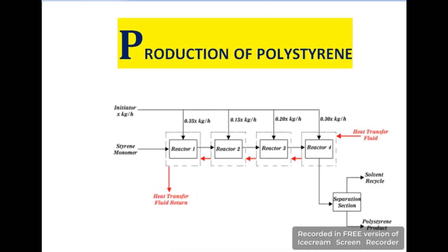Here you can see the production process flow sheet of polystyrene. Four reactors are provided in which the reaction takes place at different conditions. After the reaction we get a mixture, and after separation of that mixture we get polystyrene.